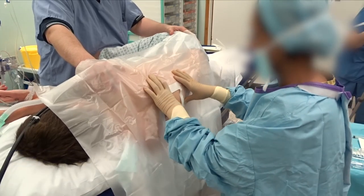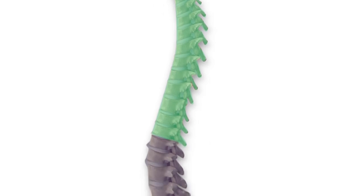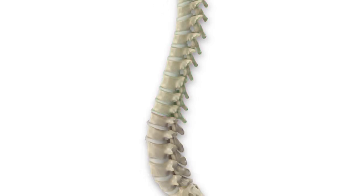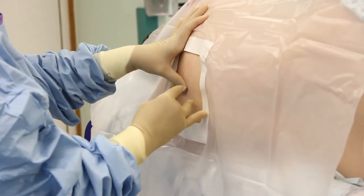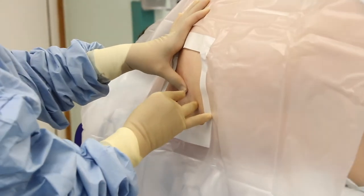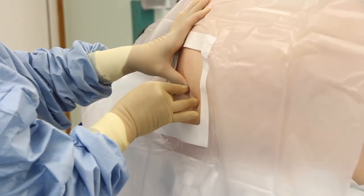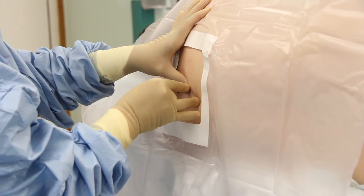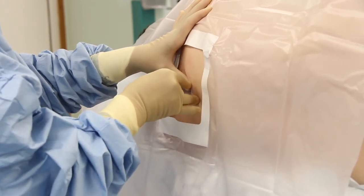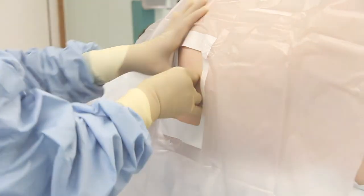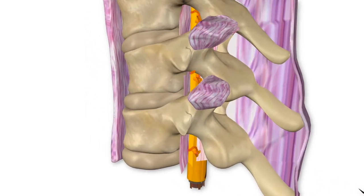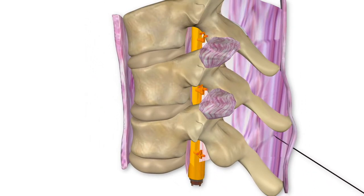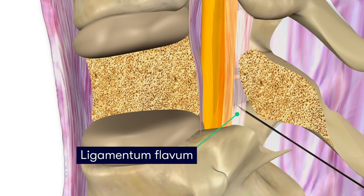We palpate to feel the spinous process of the vertebra. In the thoracic region, the spinous processes are more angulated than those within the lumbar region, and therefore there is less space to insert the needle and catheter along the midline. As a result, we need to introduce the epidural needle just lateral to the midline, using what we refer to as a paramedian approach. The needle is inserted in a cranial direction with the aim of passing over the superior aspect of the vertebral laminae and then via the ligamentum flavum into the epidural space.